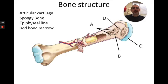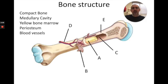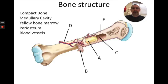The spongy bone is the part of the bone that has little pockets in it — A is pointing to some spongy bone. The epiphyseal line, sometimes called the growth line or growth plate, is D. Red bone marrow is in that spongy bone, so that would be B. Compact bone runs along the outside of the shaft of the bone — in this picture that's E. The medullary cavity is C, a space where yellow bone marrow can be. The yellow bone marrow is A, and that's going to store fat. The periosteum is the membrane that goes around the bone — that's B. And the blood vessels are D.